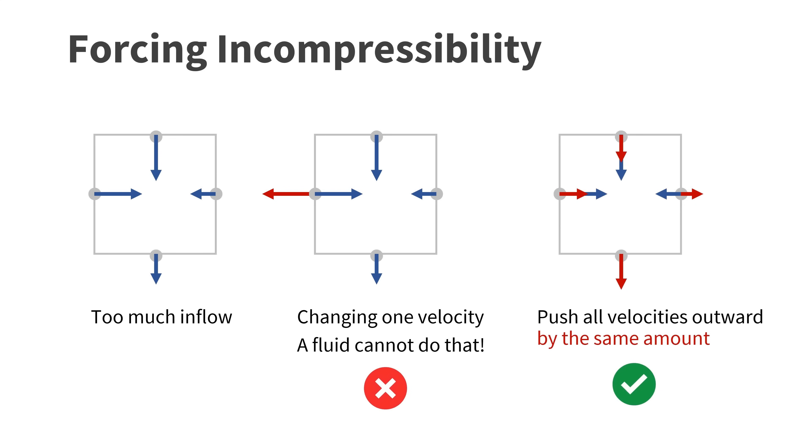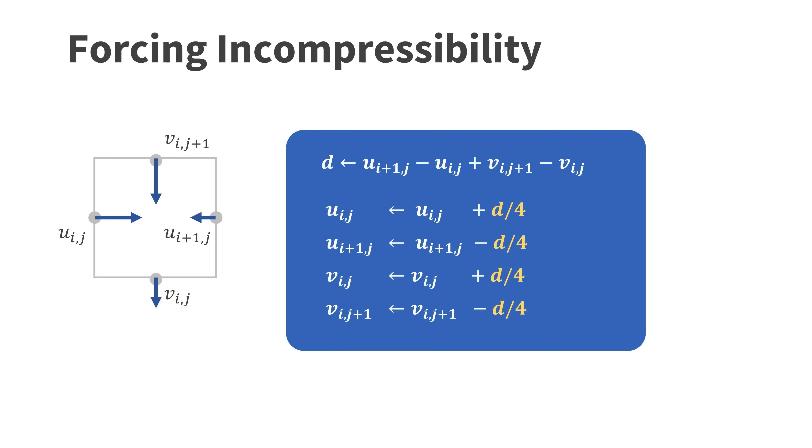Now let's see how we can force incompressibility. In this case we have too much inflow. To fix this we could simply change one velocity. However a fluid cannot do this. A fluid can only push the velocities outward or pull them inward by the same amount. We use the simplest possible way to implement this. First we compute the divergence. Then we subtract one fourth of it from the four velocities. Again we have to be careful with the signs though. If you plug the updated velocities into the equation for the divergence you see that it becomes zero.